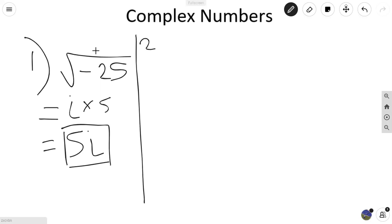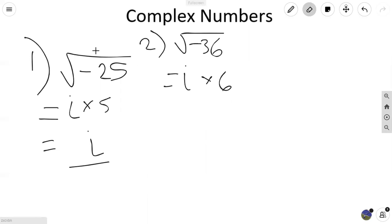Now, our next part, let's say we have negative 36. Again, the square root of negative one is i. So we have i and then multiplied by six. In this case, our final answer is 6i. I think you guys have got the hang of this. This is a quite simple topic.